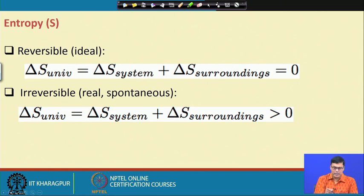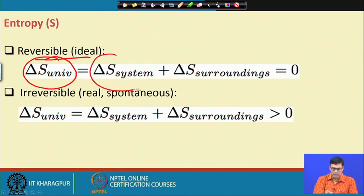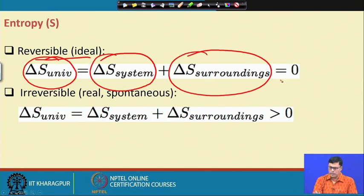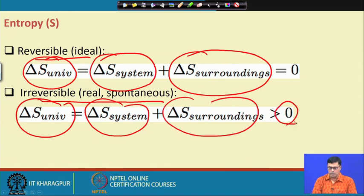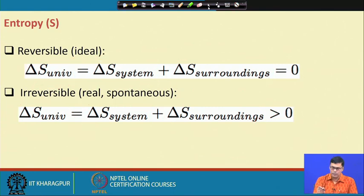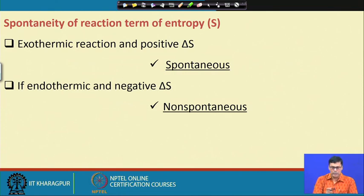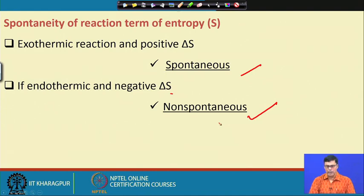For an ideal reversible system, the change in entropy of the universe equals the change in entropy of the system plus the change in entropy of the surroundings, which should equal zero. For an irreversible (real and spontaneous) process, the change in entropy of the universe — that is, the change in entropy of the system plus the surroundings — should always be greater than zero. In a spontaneous system, entropy always has a higher value.